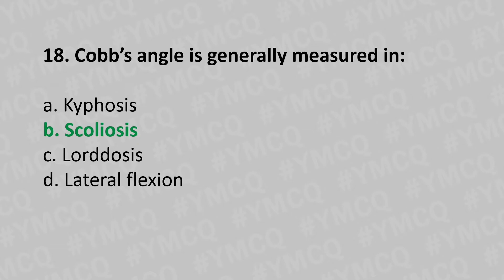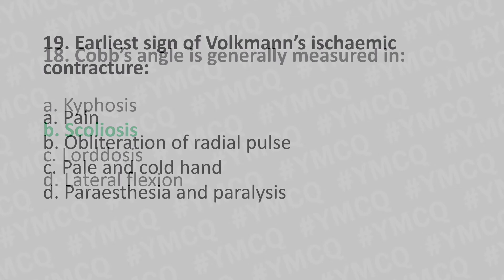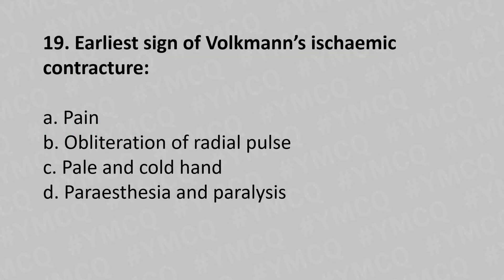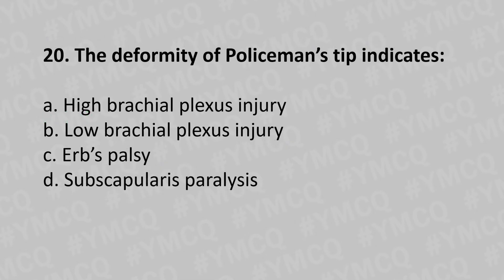Moving to our 19th question: the earliest sign of Volkmann's ischemic contracture is — option A pain, option B obliteration of the radial pulse, option C pale and cold hand, option D paresthesia and paralysis. And the answer is option A pain.